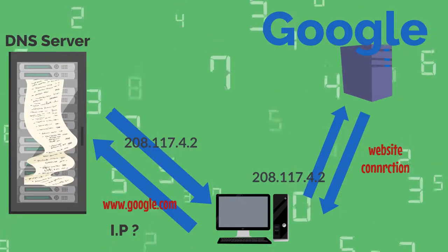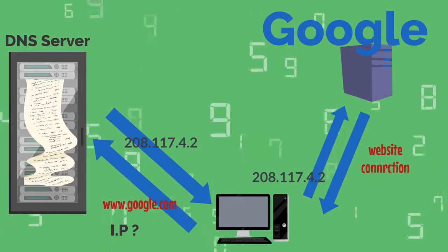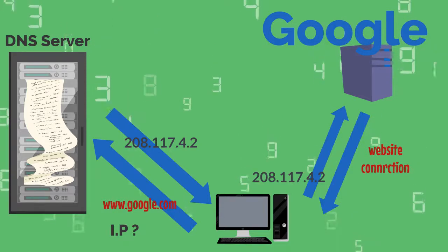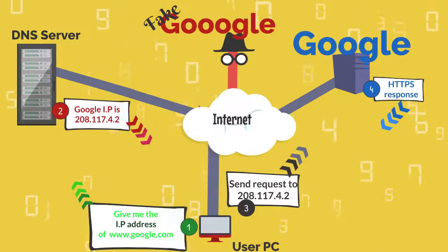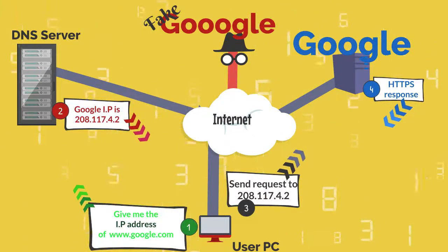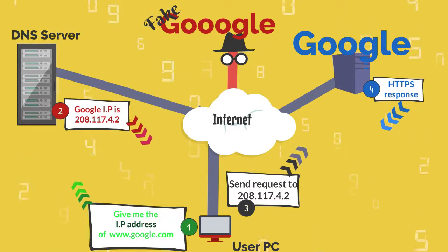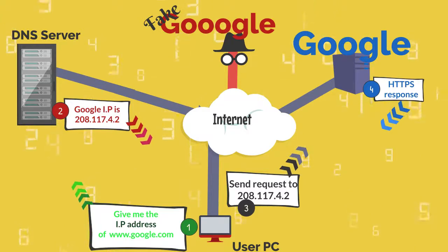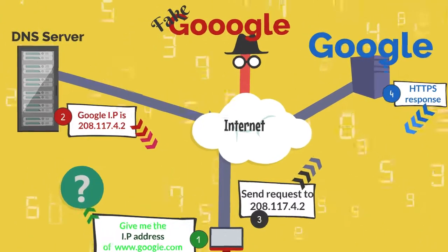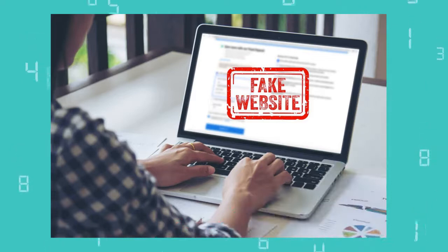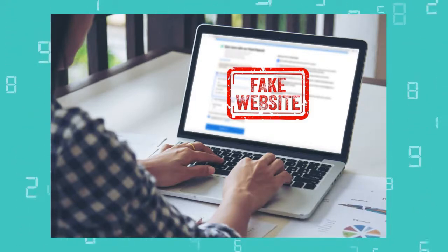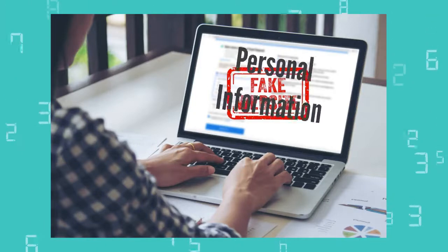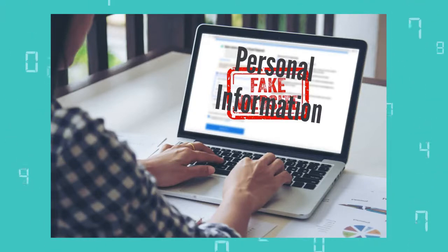One method bad people use for pharming is changing the IP address of a particular website on the user's computer. This is how a fake website is loaded on the user's computer instead of the original one. This fake website can be very dangerous. Normally these fake websites are used to steal user data — for example, if the user is directed to a fake bank website, they may end up entering personal information on it.